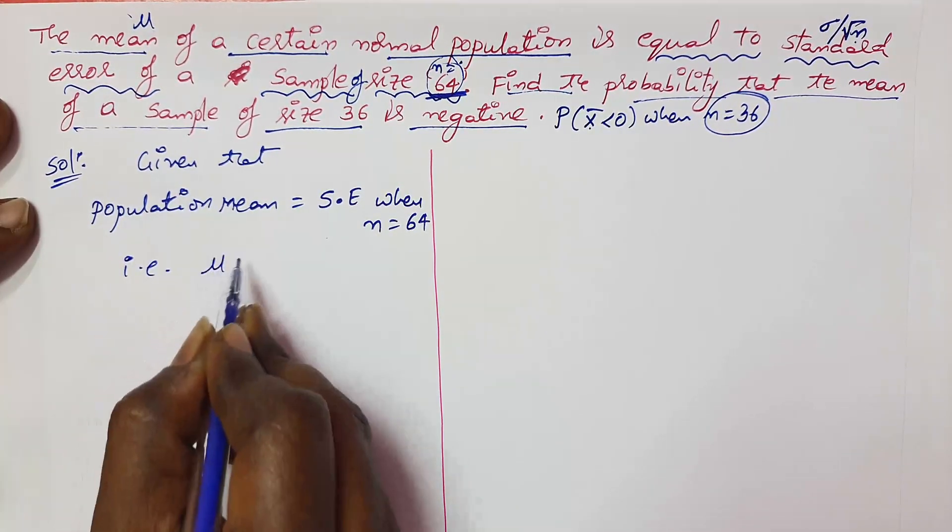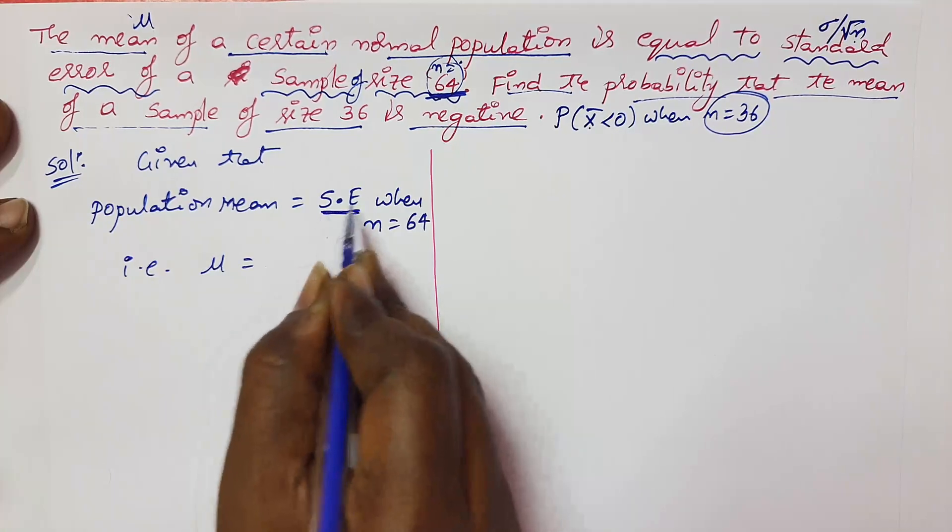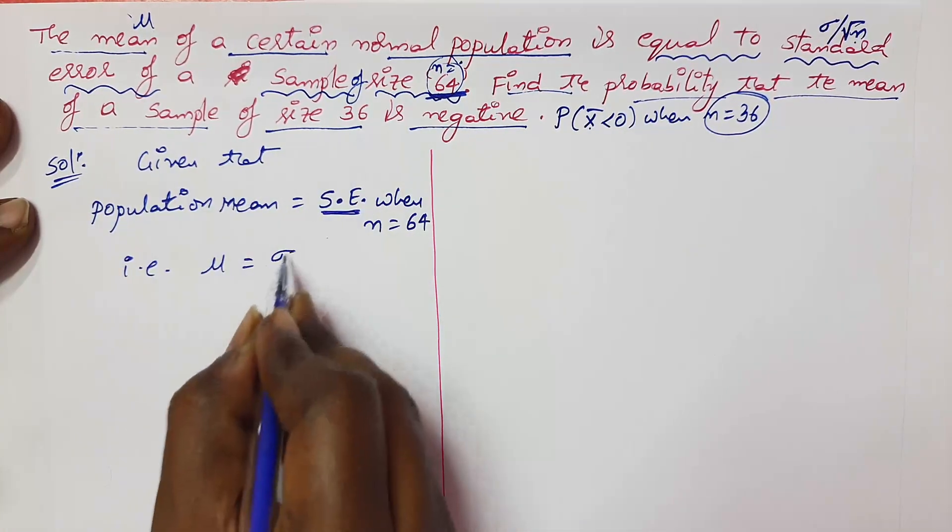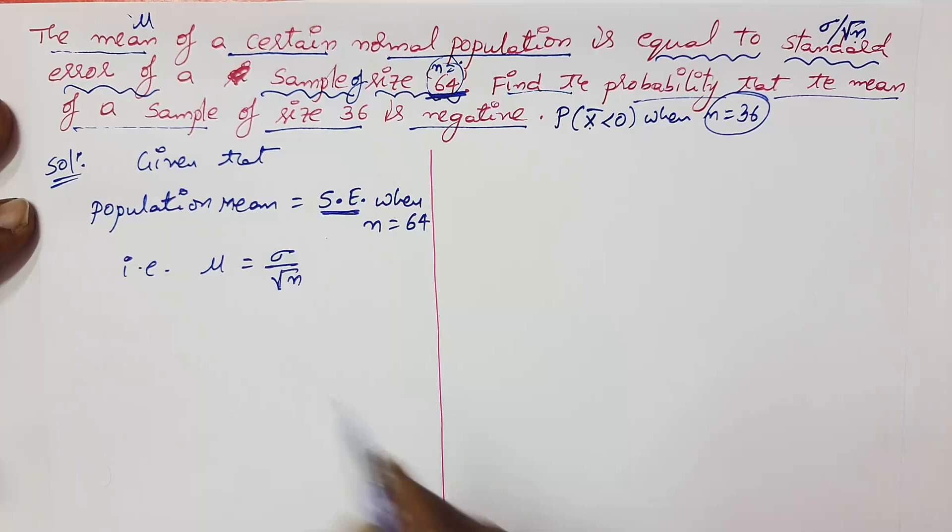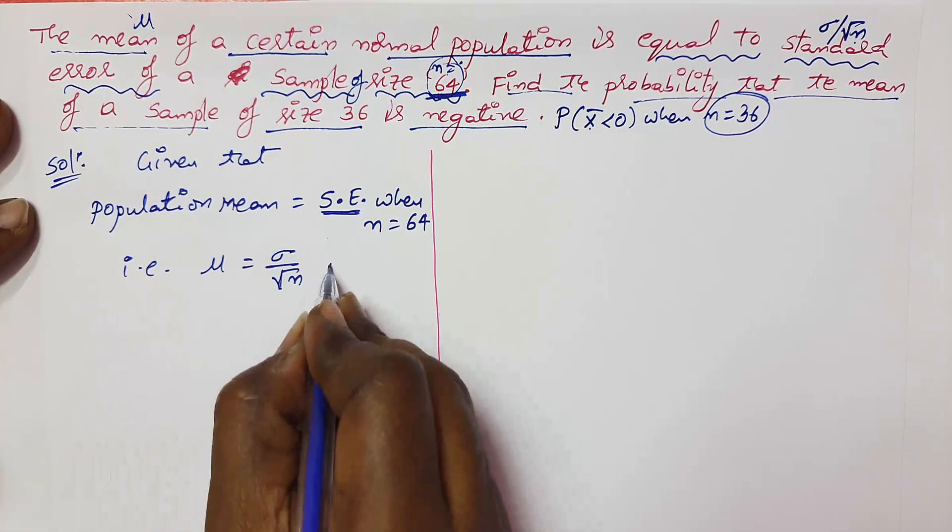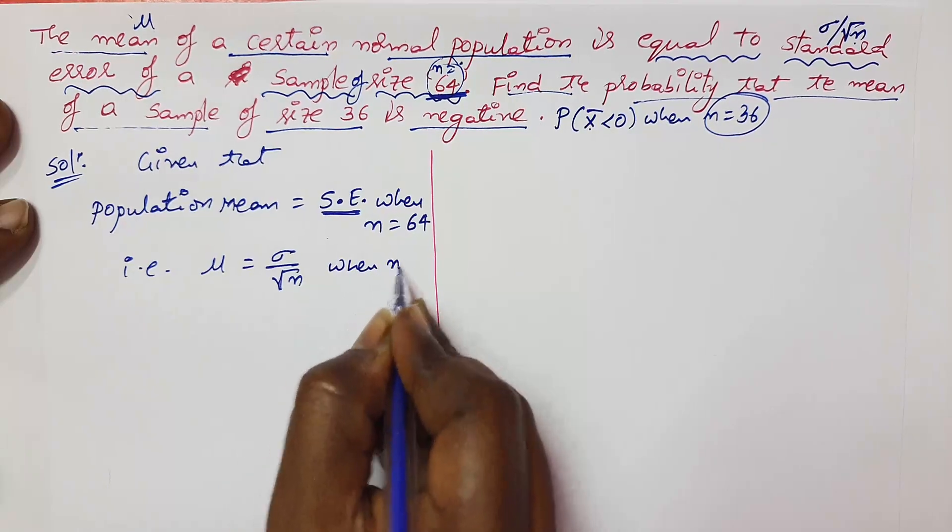So population mean is nothing but mu and standard error is nothing but sigma by root n. In the case of normal population, otherwise infinite population, standard error is sigma by root n when n equals 64.